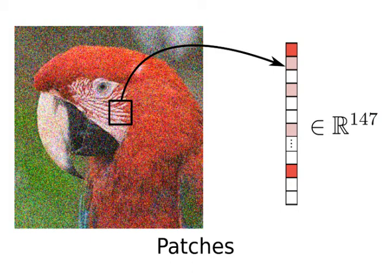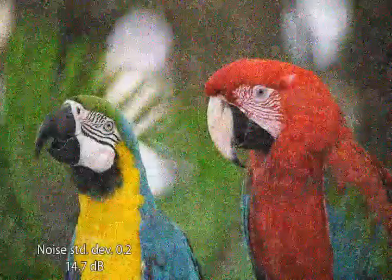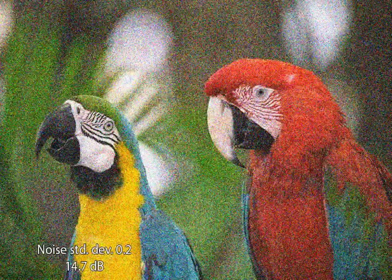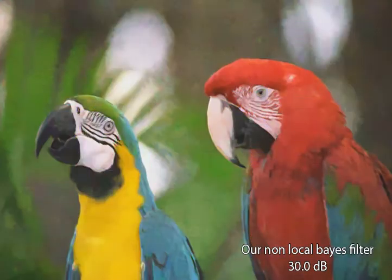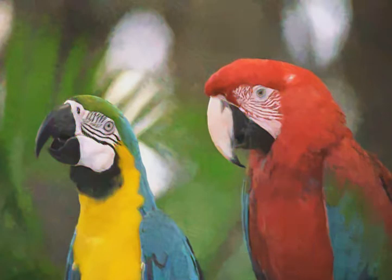We use this structure to accelerate and improve current collaborative filters such as non-local Bayes. Our cov tree is built and learned from a set of patches extracted from the noisy image. With this data structure, we produce a non-local Bayes filter that produces better results than the original non-local Bayes.